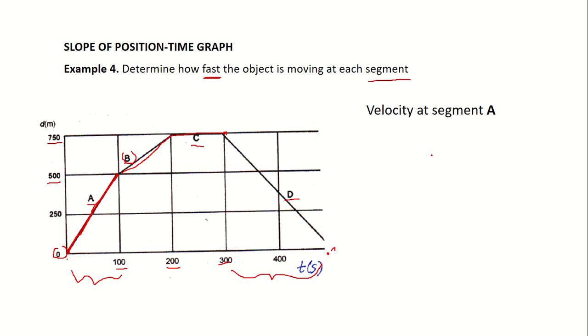Okay, let's start. Let's start solving velocity at segment A. So, this is my formula. I move from 0 to 500. So, I changed position by how much? By 500. And that happened for, or in a duration of 100 seconds. So, that's going to be 500 over 100. Answer is 5.